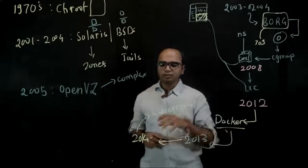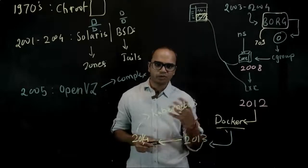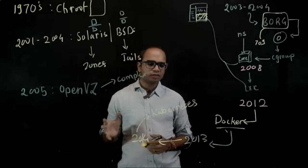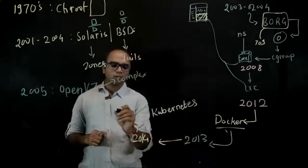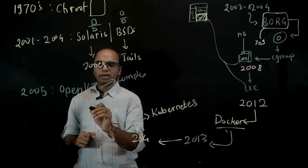Now in 2014 Kubernetes was released. By around 2014 to 15, Docker had released its own orchestration engine called Swarm.